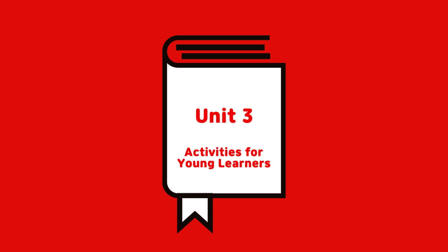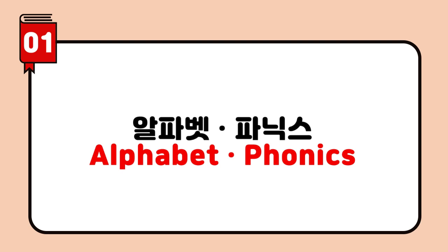Unit 3: Activities for toddlers and beginners. Section 1: Alphabet and Phonics. Before we start, let's sing the alphabet song we learned last time. Point to the letters as you sing the song.